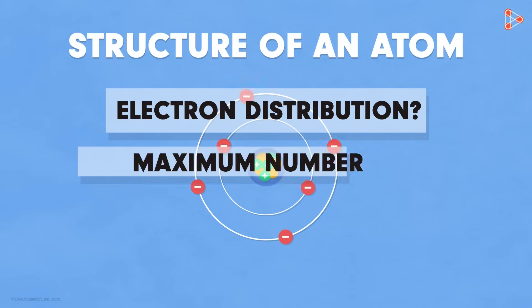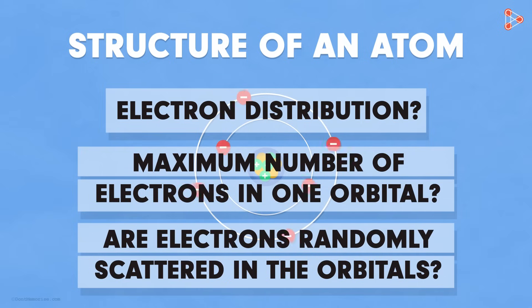Is there a way to find out the maximum number of electrons that one orbital can contain? Or is it that the electrons are randomly scattered in the orbitals? Let's find out the answers to these questions in our upcoming video.